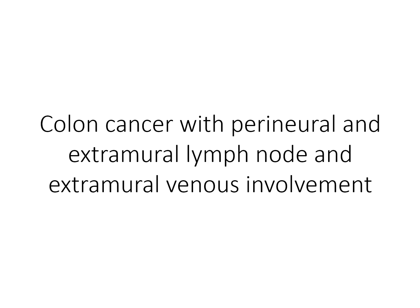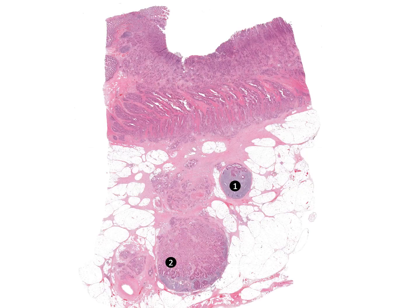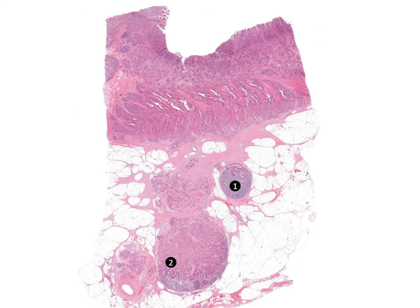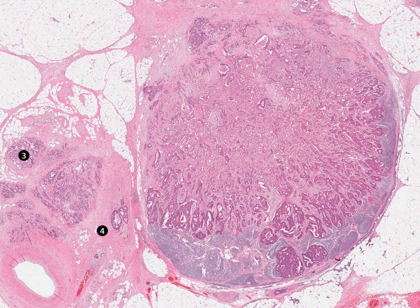This advanced colon cancer shows the adverse prognostic features of perineural and extramural lymph node and extramural venous involvement. In this lymph node, tumor is mostly in the subcapsular region with more limited parenchymal involvement. In contrast, this lymph node is almost entirely effaced by tumor.